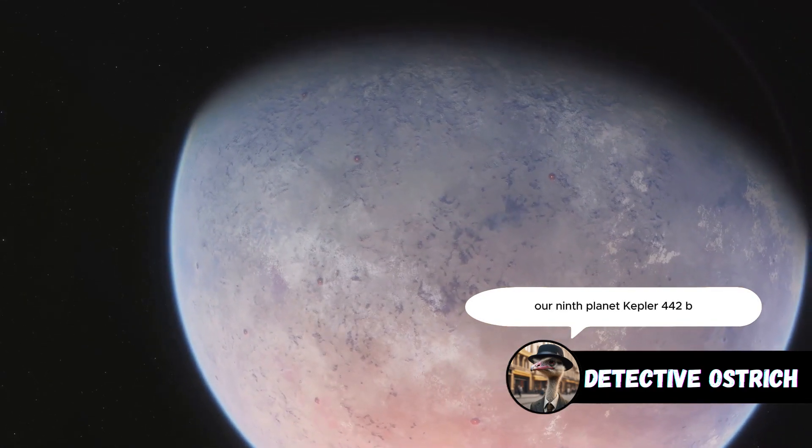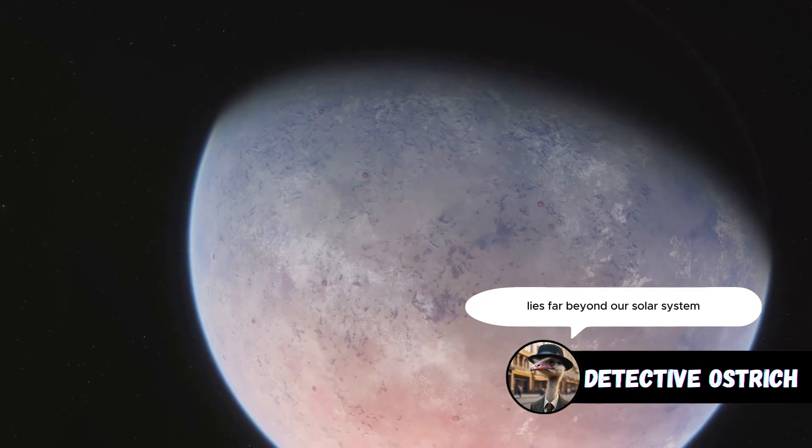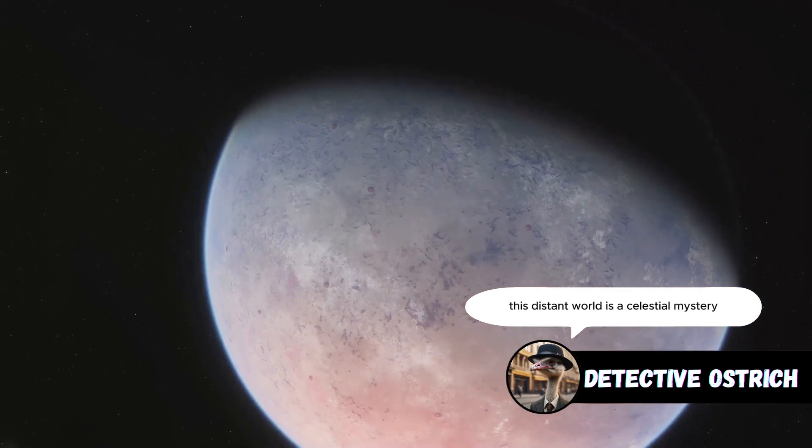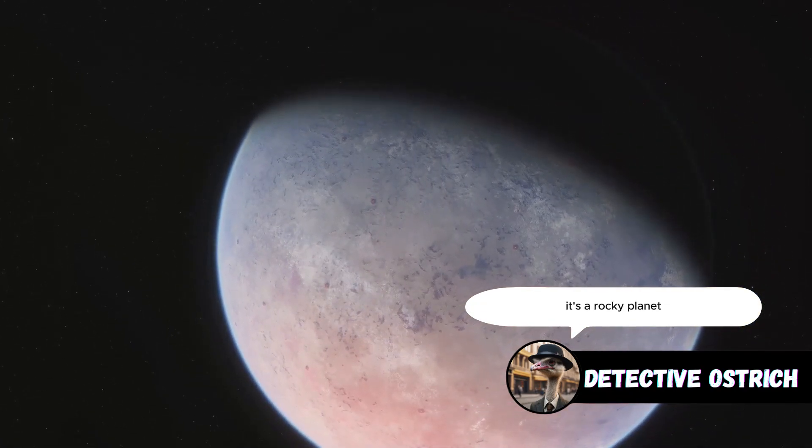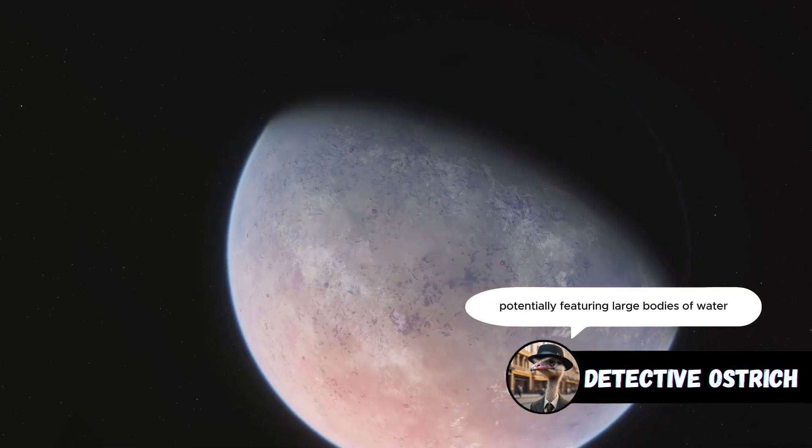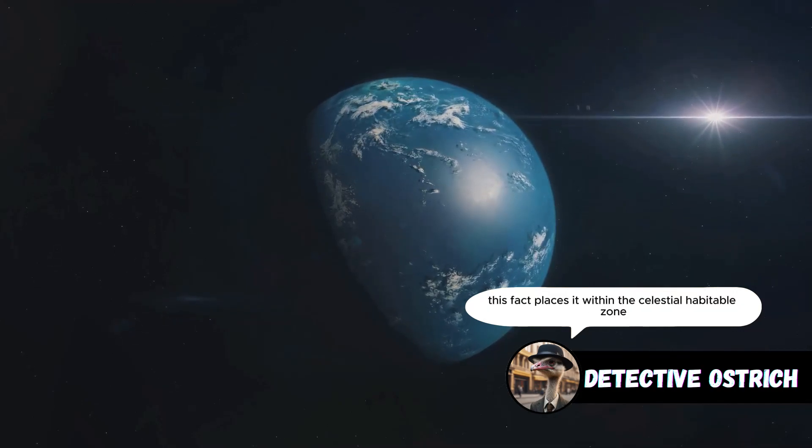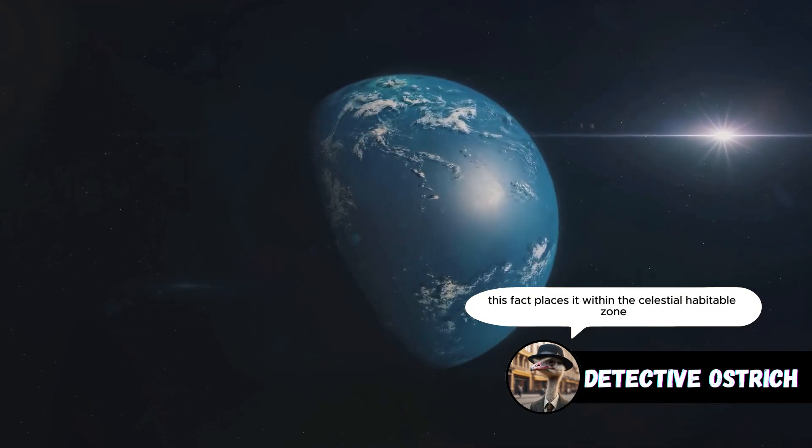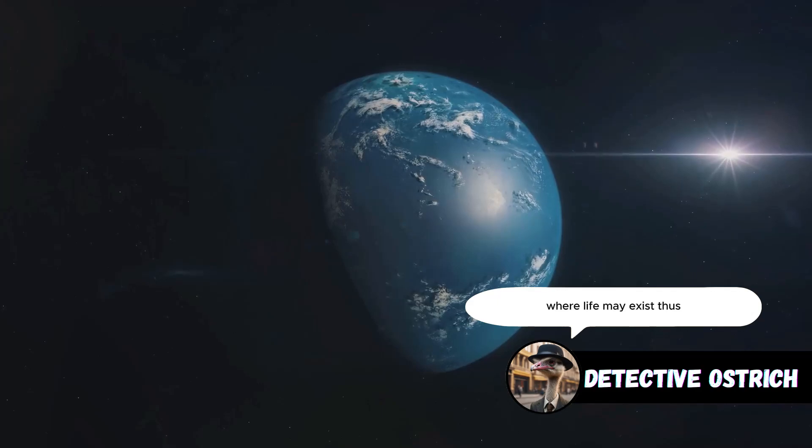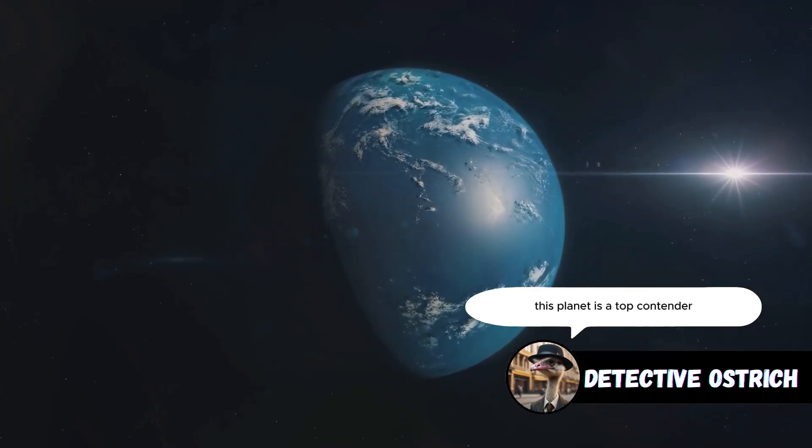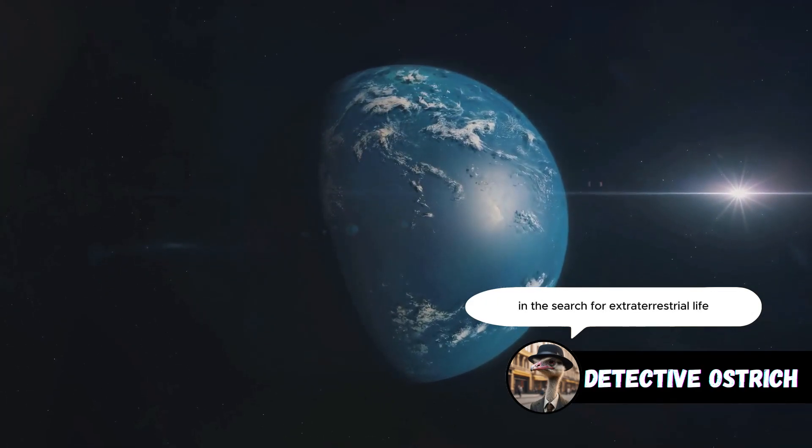Our ninth planet, Kepler-442b, lies far beyond our solar system. This distant world is a celestial mystery. It's a rocky planet, potentially featuring large bodies of water. Scientists suggest it might mirror Earth's oceans. This fact places it within the celestial habitable zone, where life may exist. Thus, this planet is a top contender in the search for extraterrestrial life.